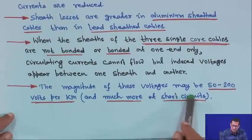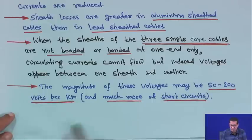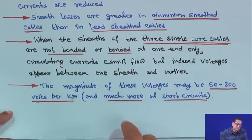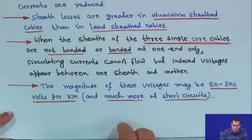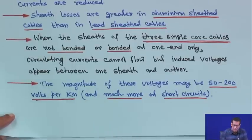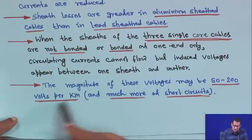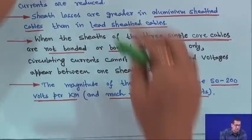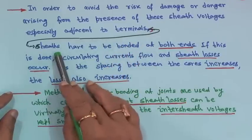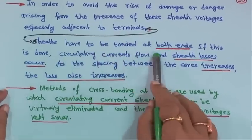The magnitude of this voltage may be 50 to 200 volts per kilometer, and much more at short circuit. If the sheaths are not bonded or bonded at one side only, circulating current cannot flow, but voltage will be induced in this range of 50 to 200 volts per kilometer, and much higher at short circuit. In order to avoid risk of damage arising from sheath voltages, especially adjacent to terminals, sheaths have to be bonded at both ends.